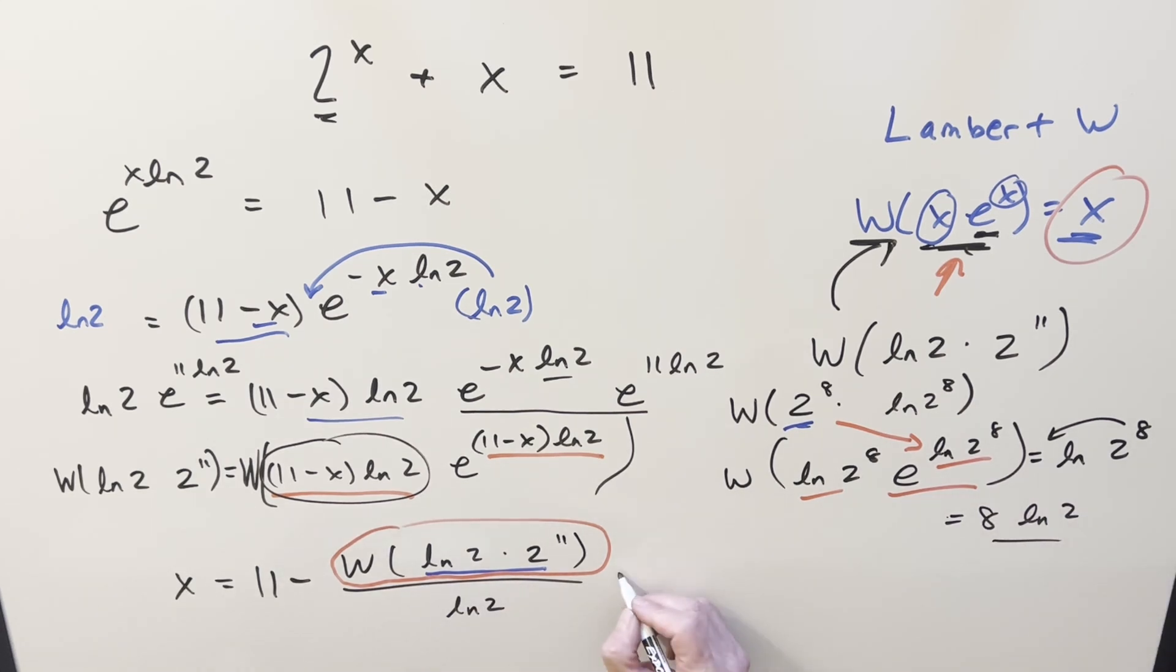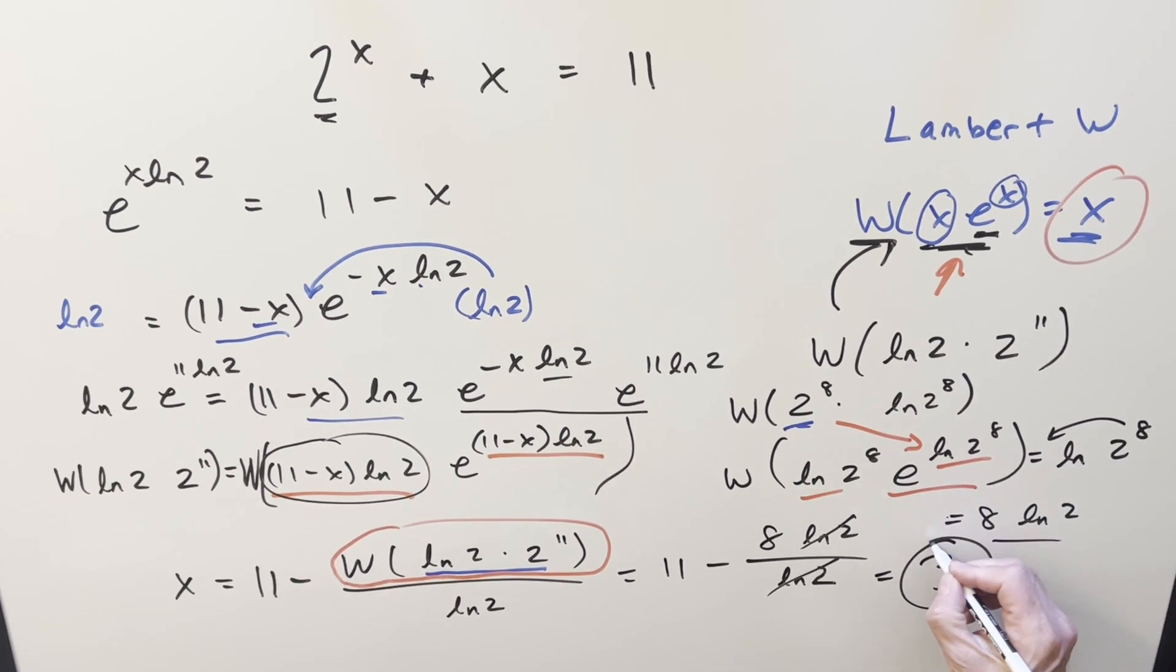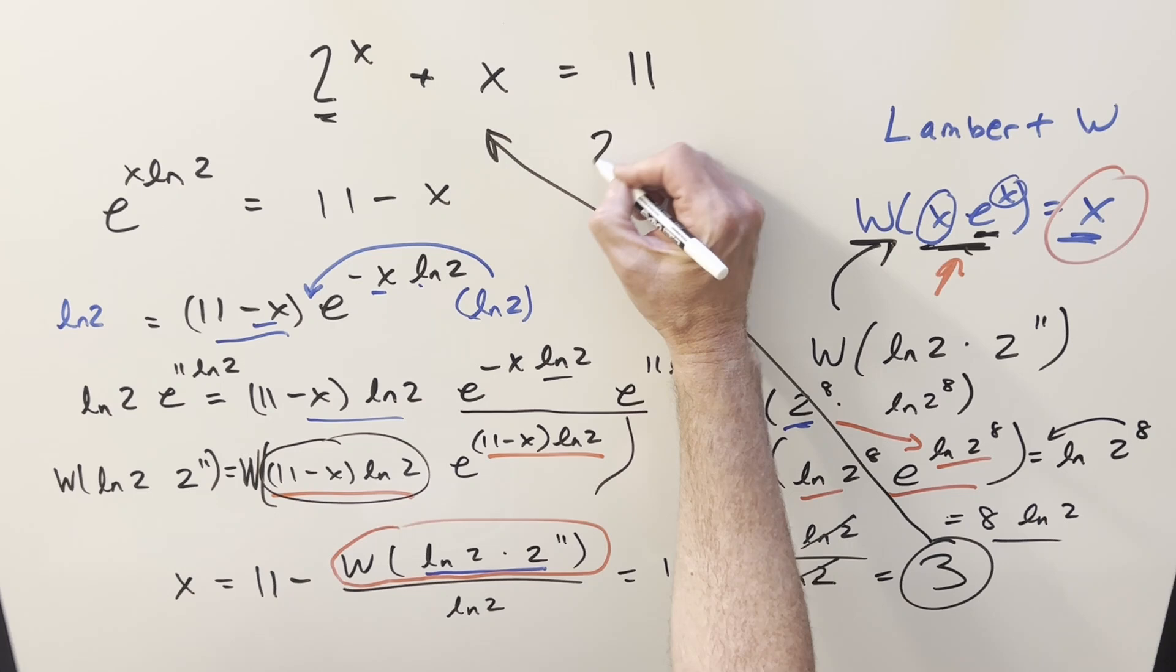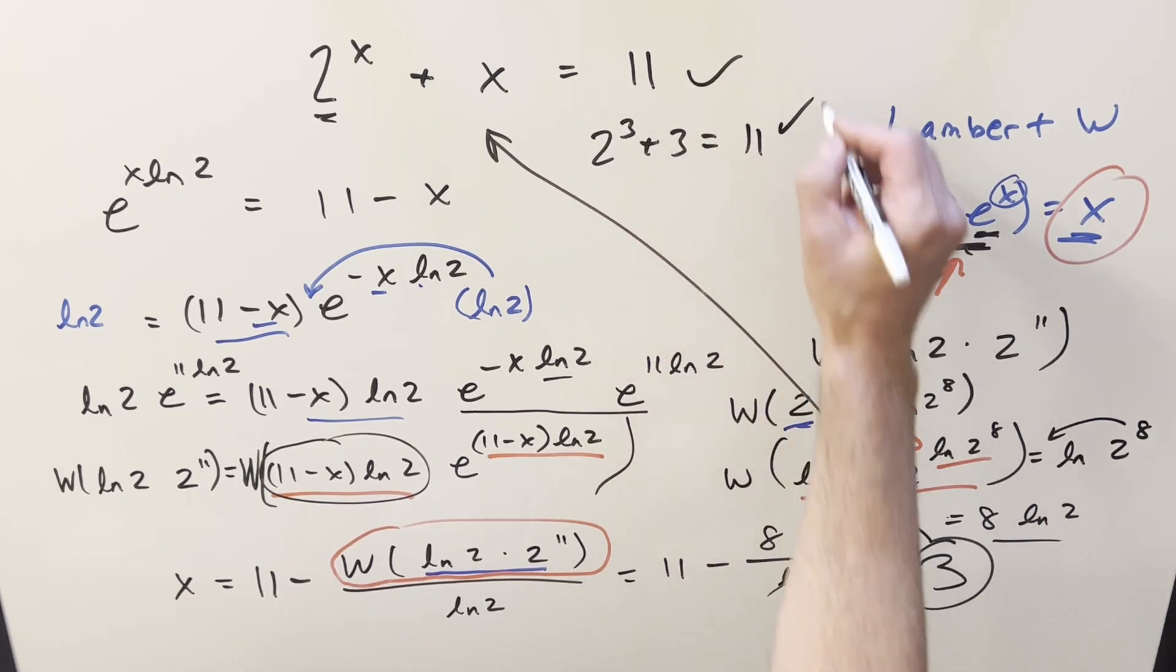So let's take this and put it back in our solution. So what we have over here is going to be 11 minus 8 ln 2 over ln 2. But then the ln 2s cancel here and here. And then just calculating 11 minus 8, for my final solution to this, we get just 3. And now if we want to validate, just take 3 and plug it back into this thing. We have take 2 cubed, which is 8, plus 3. And that's going to be equal to 11. So that works.